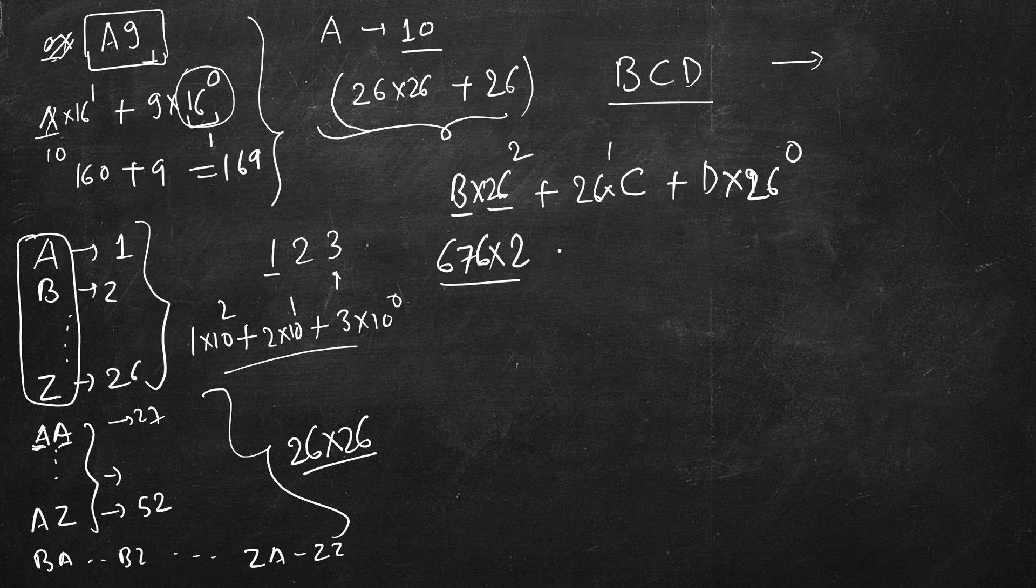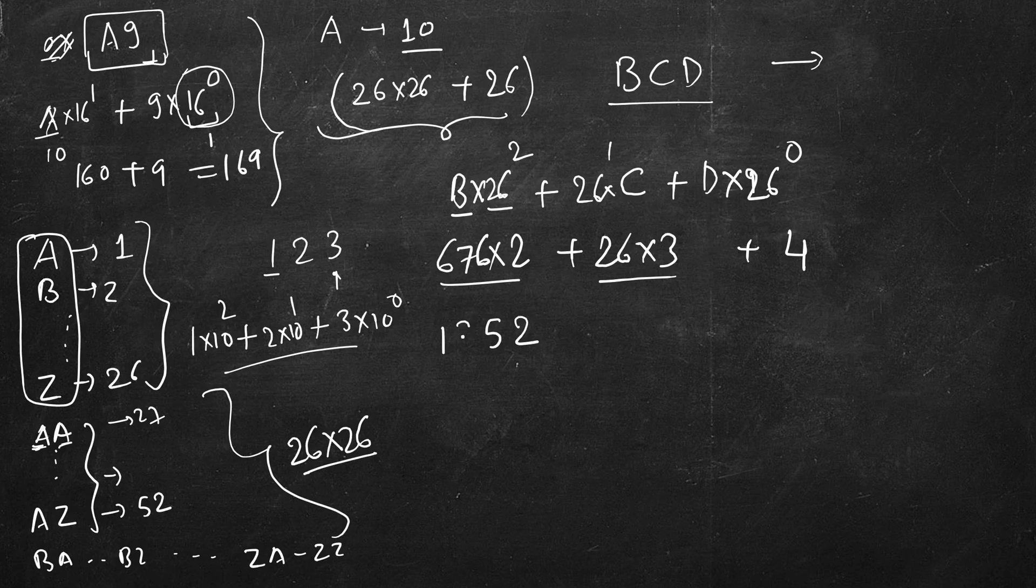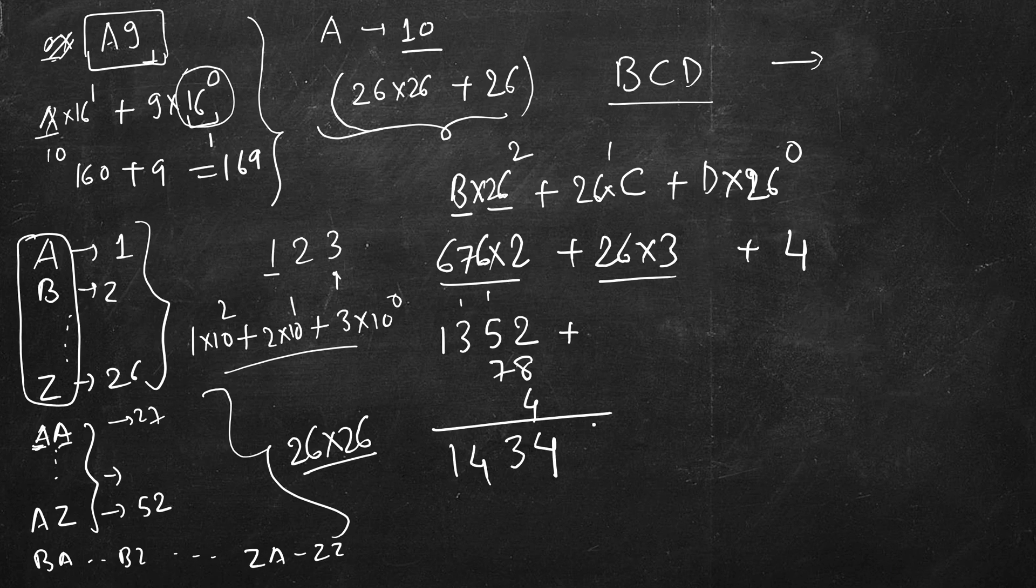26 square is 676, and B means 2, plus 26 multiplied by 3, plus this is 1, so just 4. If you multiply this, we have 2 and 14 plus 1 is 5, then 12 plus 1 is 13. So 1352 plus 78 plus 4, this is 10 plus 4 is 14 carry 1, 12 plus 1 is 13 carry 1, 14. So you can verify that BCD the column number is 1434.